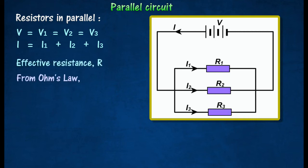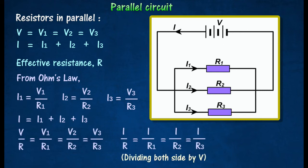By applying Ohm's law to each resistor, the effective resistance R can be calculated as follows.